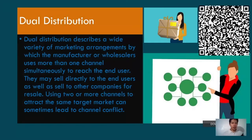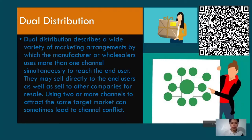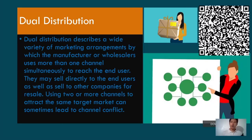Dual distribution describes a wide variety of marketing arrangements by which the manufacturer or wholesaler uses more than one channel simultaneously to reach the end user. They may sell directly to end consumers as well as sell to other companies for resale or retail. Using two or more channels to attract the same target market can sometimes lead to channel conflict.